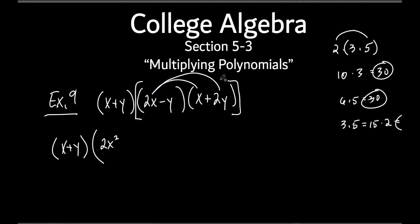Now we do the outside — remember FOIL: F-O-I-L. Outside is 2x times 2y. What's the sign? Both are positive, so plus. Always put your sign first. Then 2 times 2 is 4, and x times y is just xy — you just stick them next to each other, no dot needed. So we get plus 4xy. Now the inside: it's a negative times a positive, which is negative. It's y times x, but we put them in alphabetical order, so minus xy.